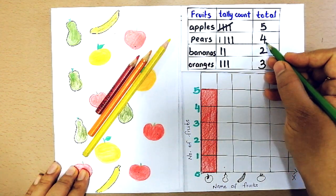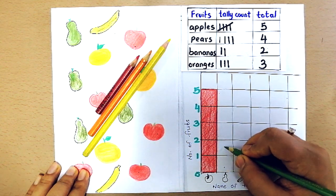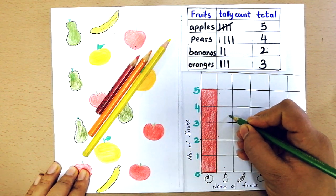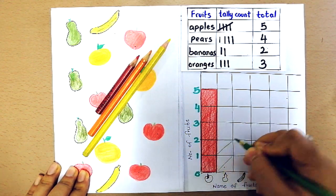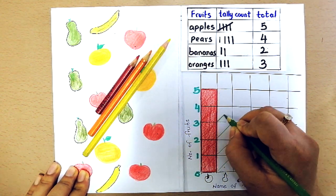For pears I'm going to color 4 blocks with green. So let's color 1, 2, 3, 4.